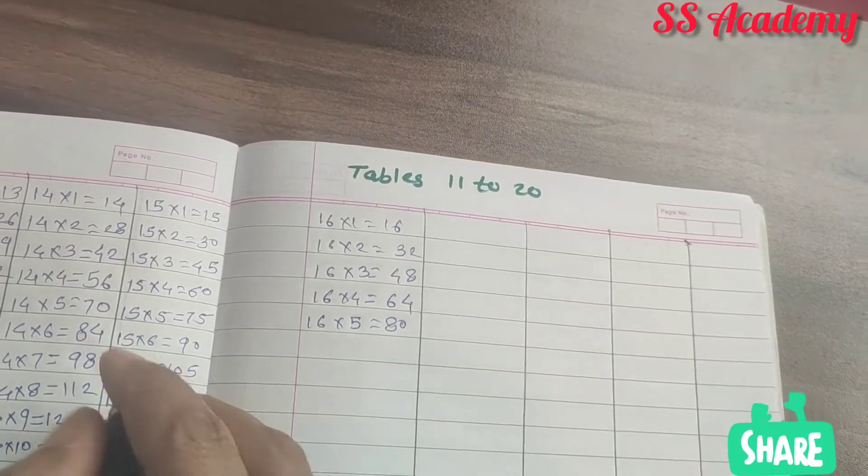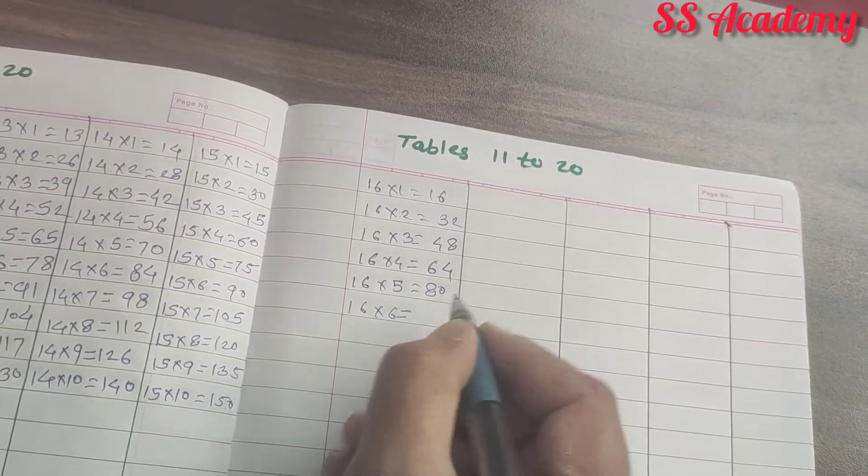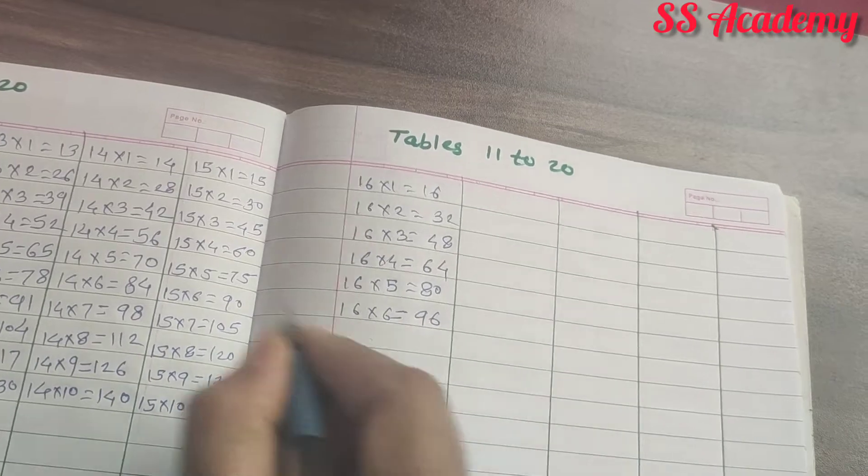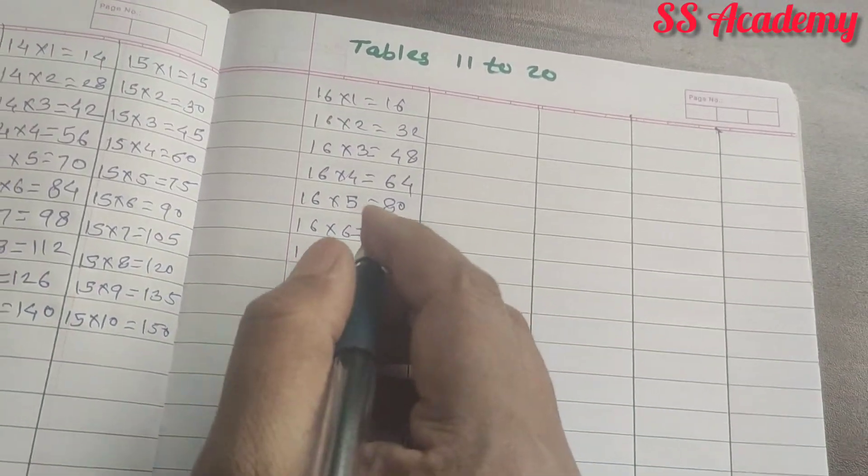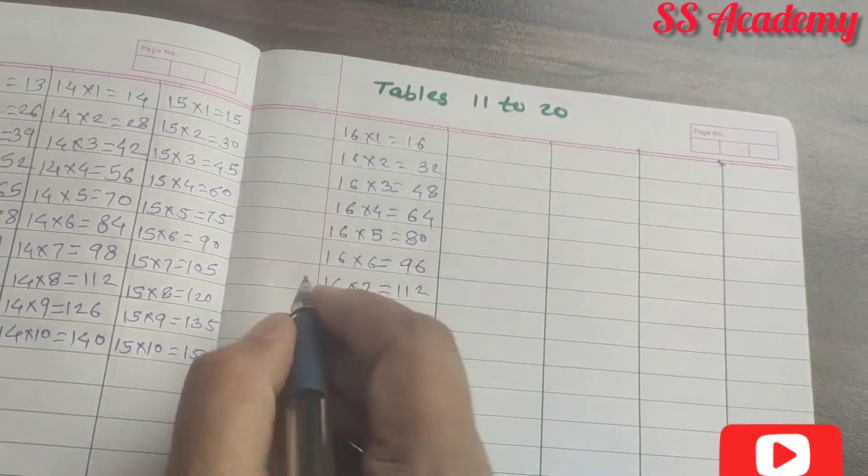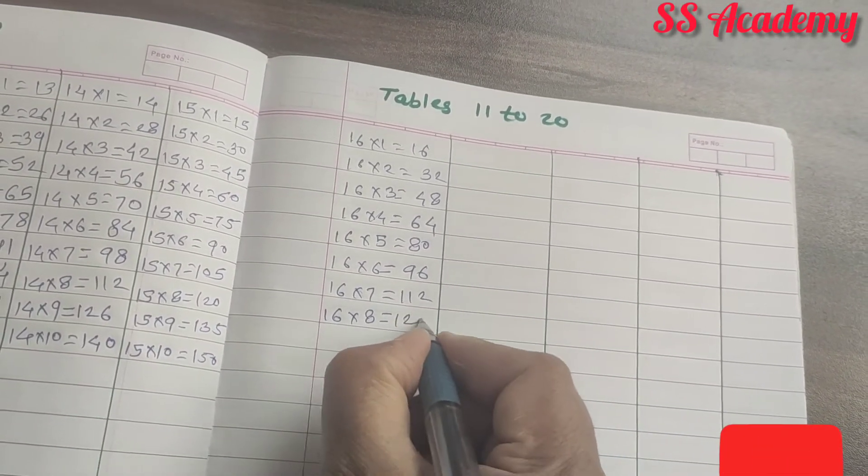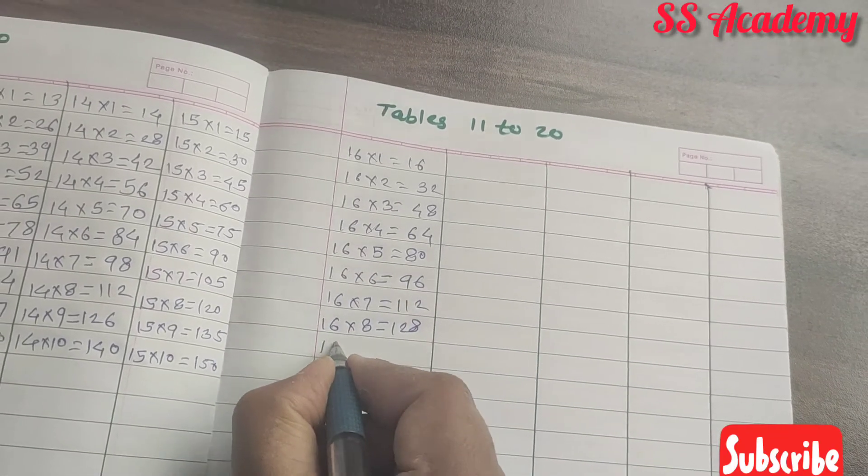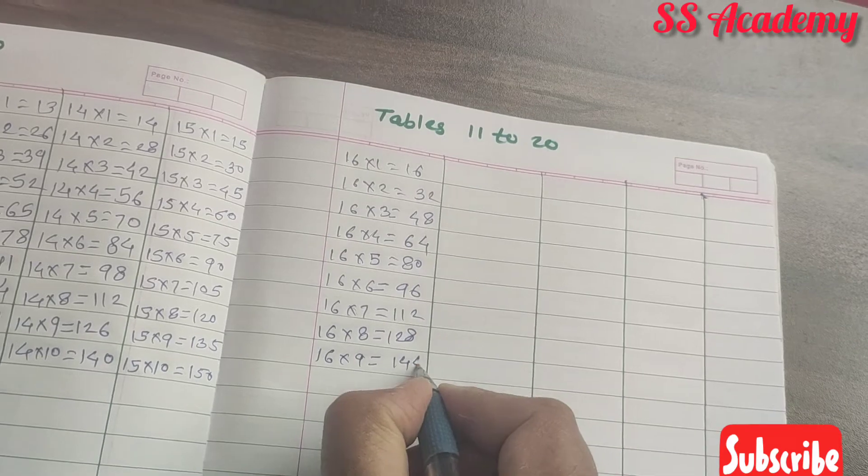16 times 5 is 80. 16 times 6 is 96. 16 times 7 is 112. 16 times 8 is 128. 16 times 9 is 144.